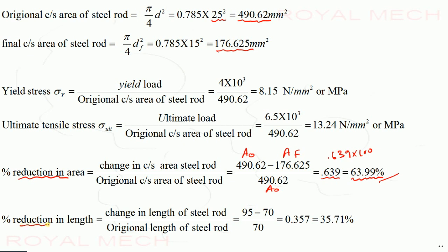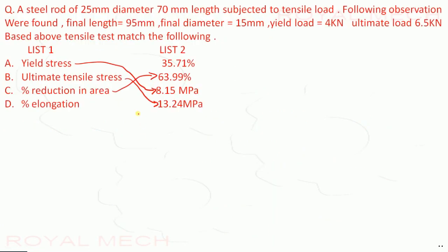Percentage elongation in length: change in length to original length. Final length is 95 mm, original length is 70 mm. (95 − 70) / 70 = 0.357, that equals 35.71%. So percentage elongation is 35.71%.